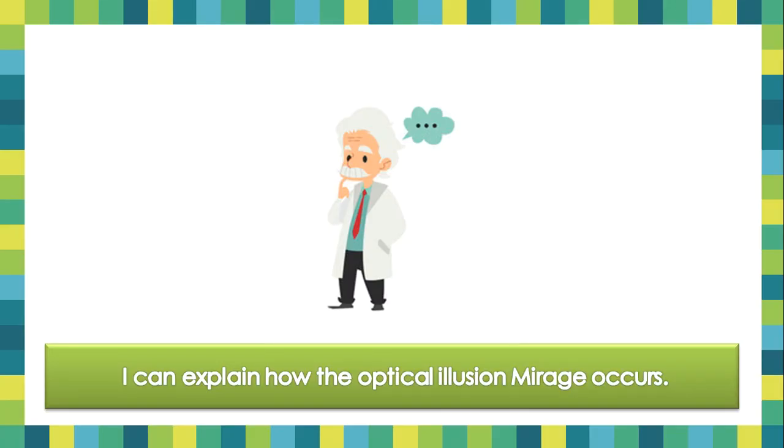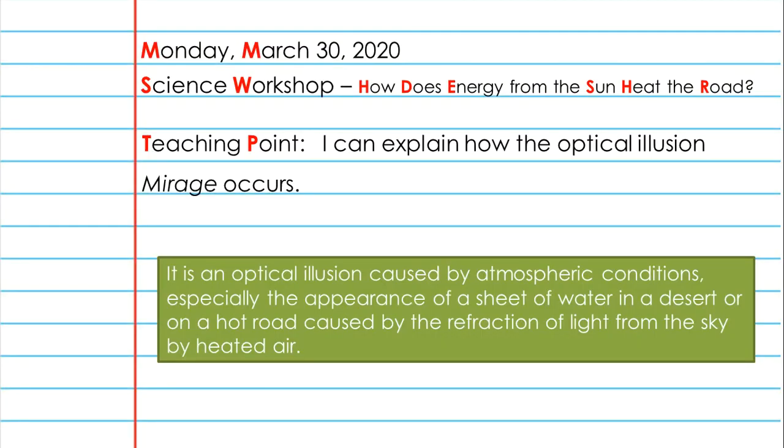So our teaching point, yet again, is I can explain how the optical illusion, mirage, occurs. But what is that? Probably we have seen this before, but not as we call it. So mirage, it is an optical illusion caused by atmospheric conditions, especially the appearance of a sheet of water in a desert or on a hot road caused by the refraction of light from the sky by heated air.